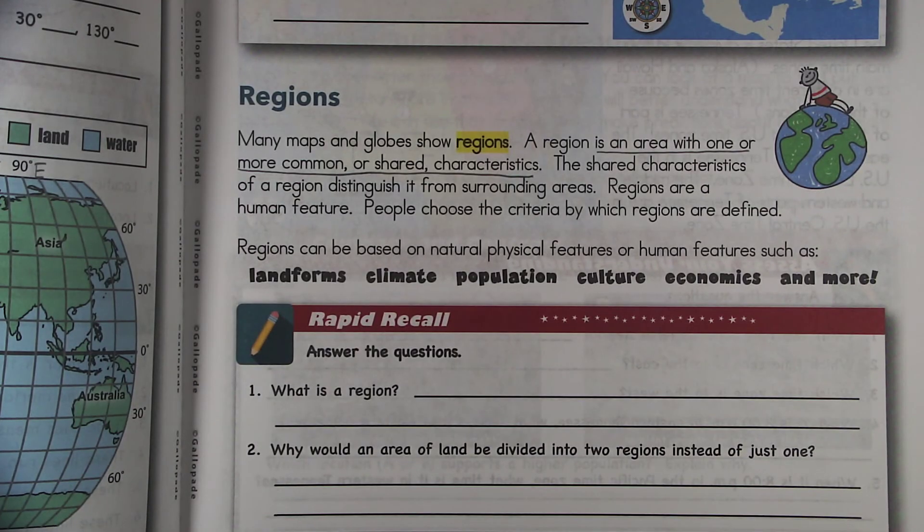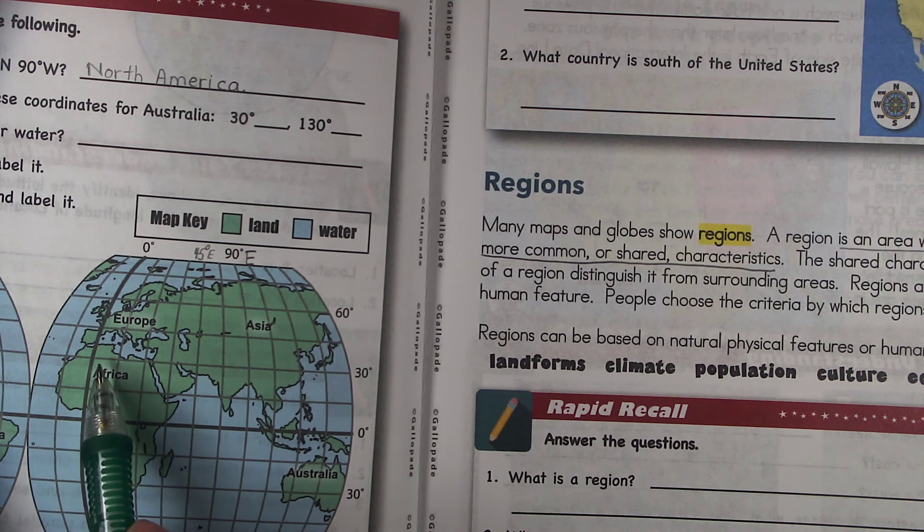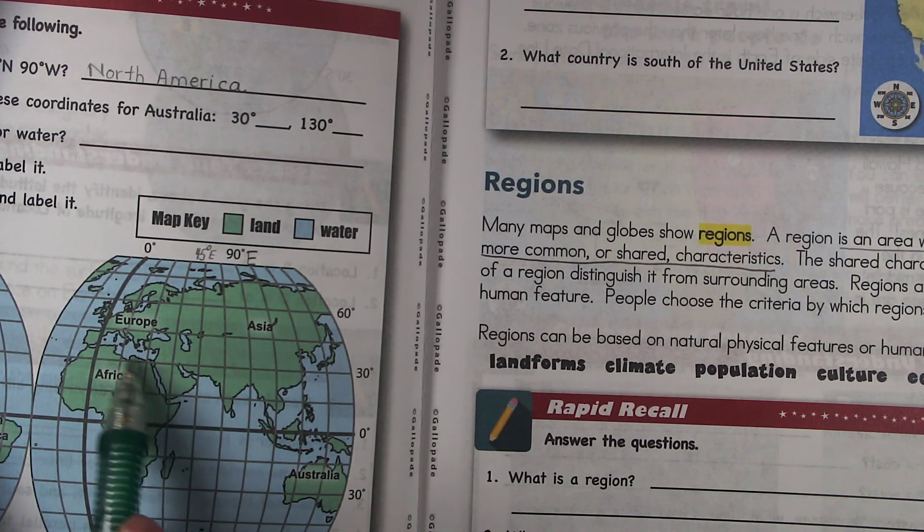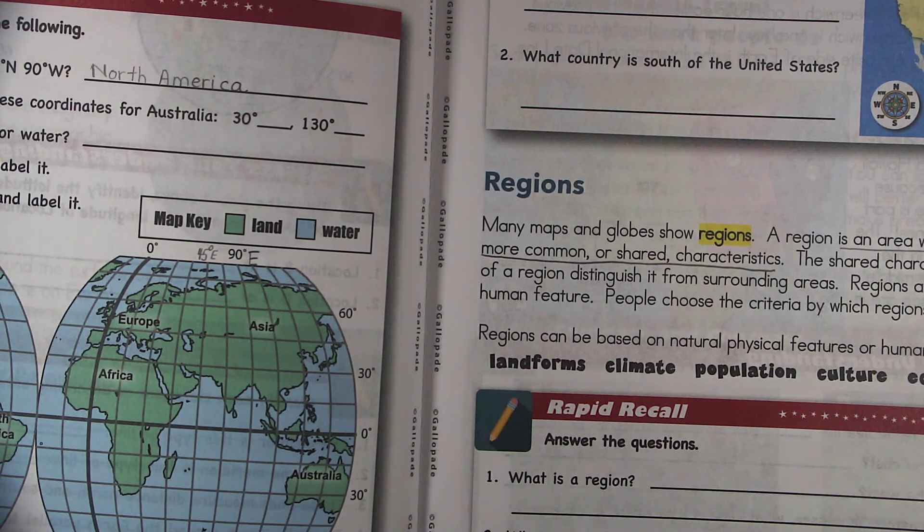Like if you say the desert, there are desert regions in Africa. So right around here is a very large desert. So this would be its own region. It would be the desert region.